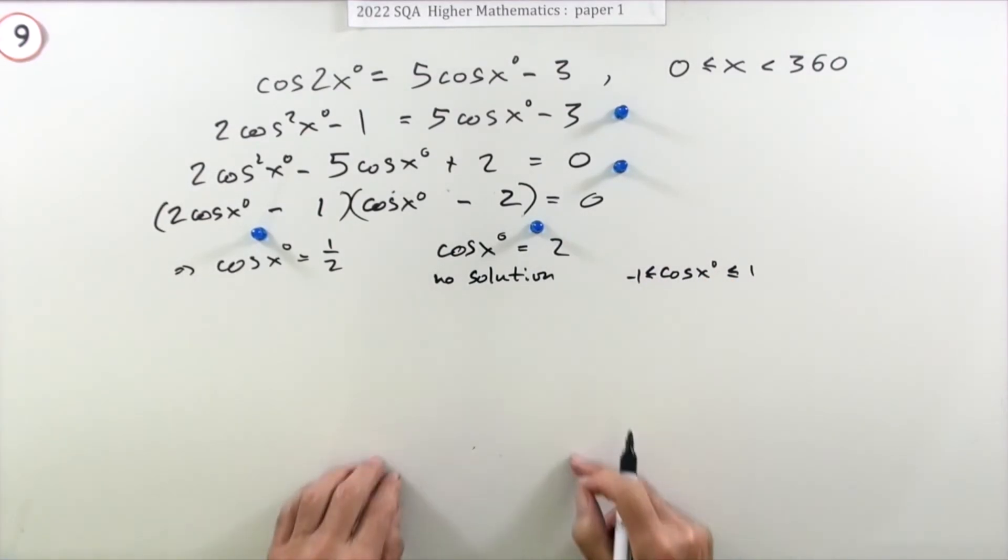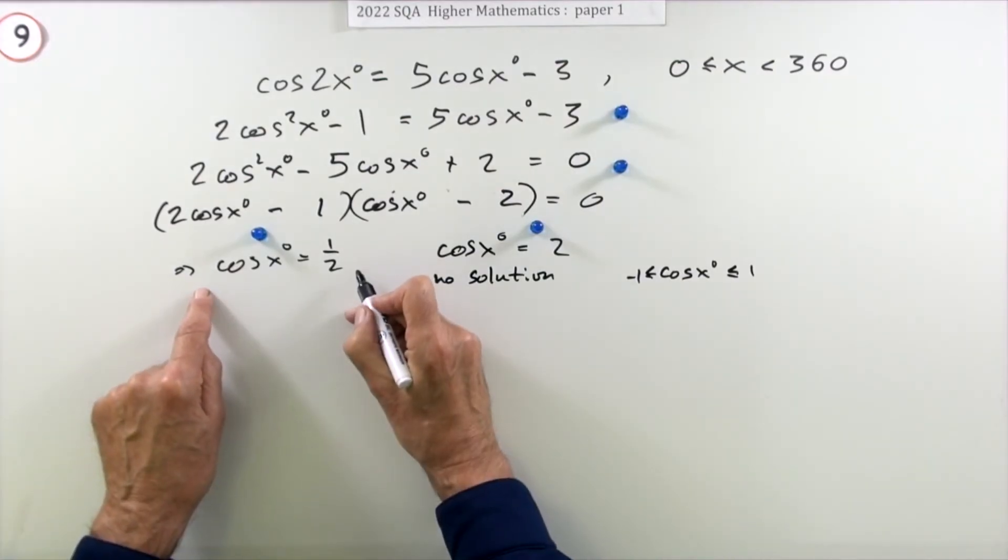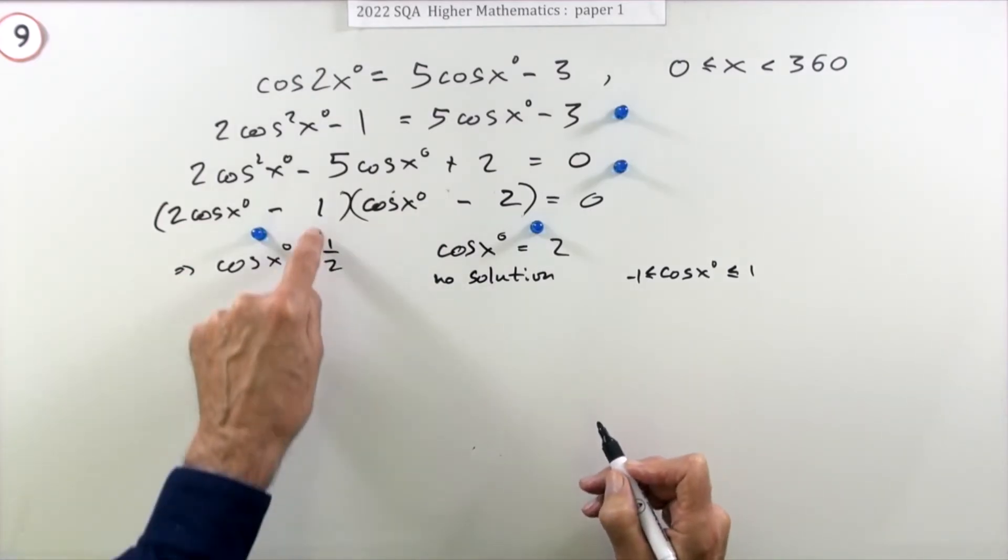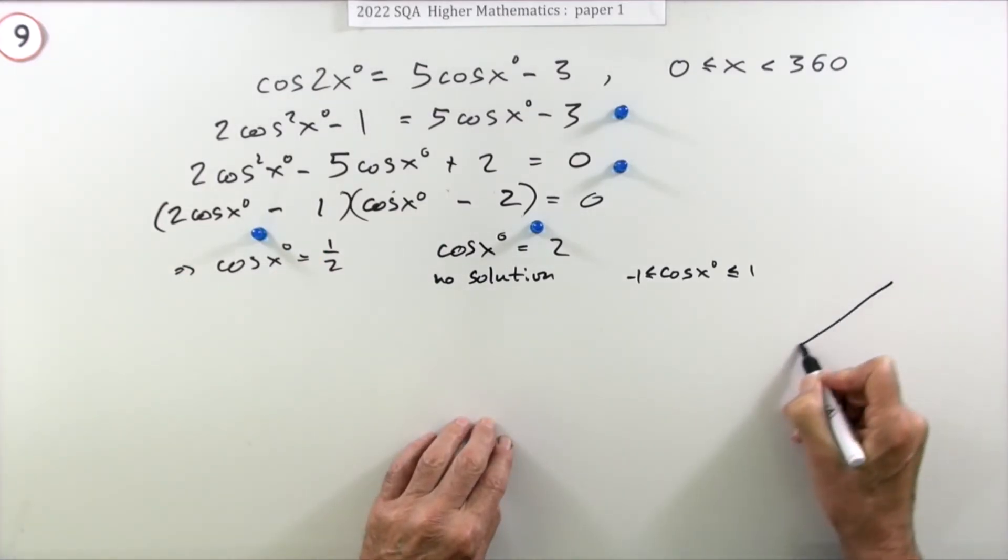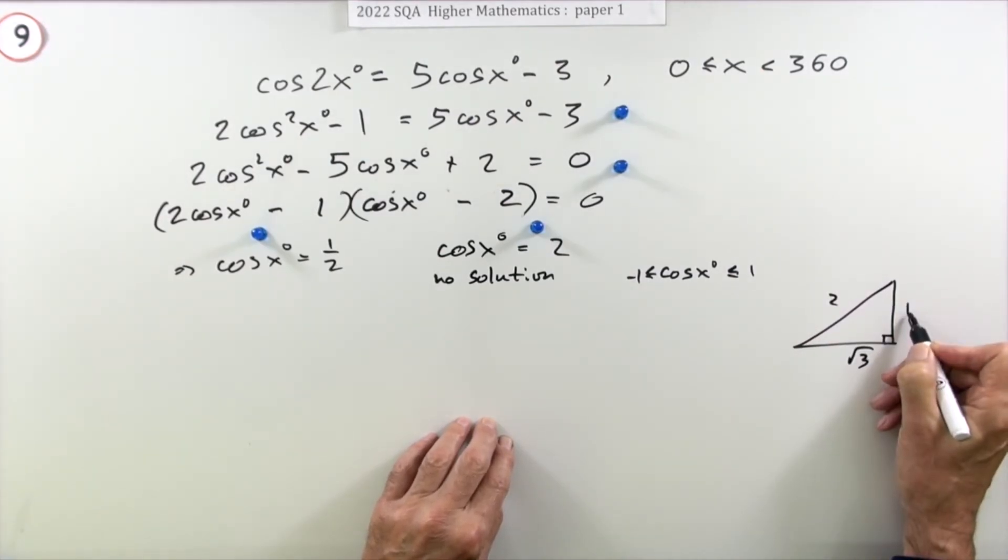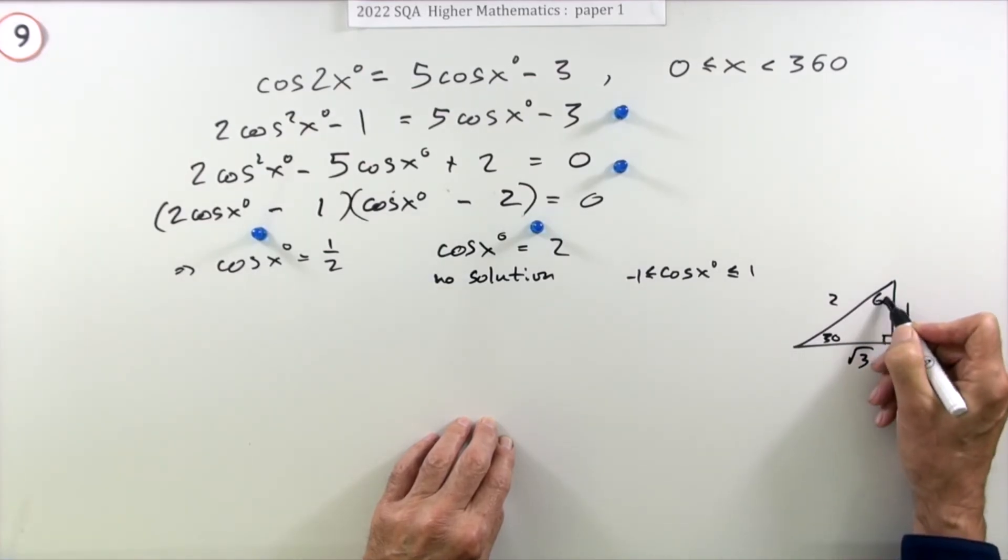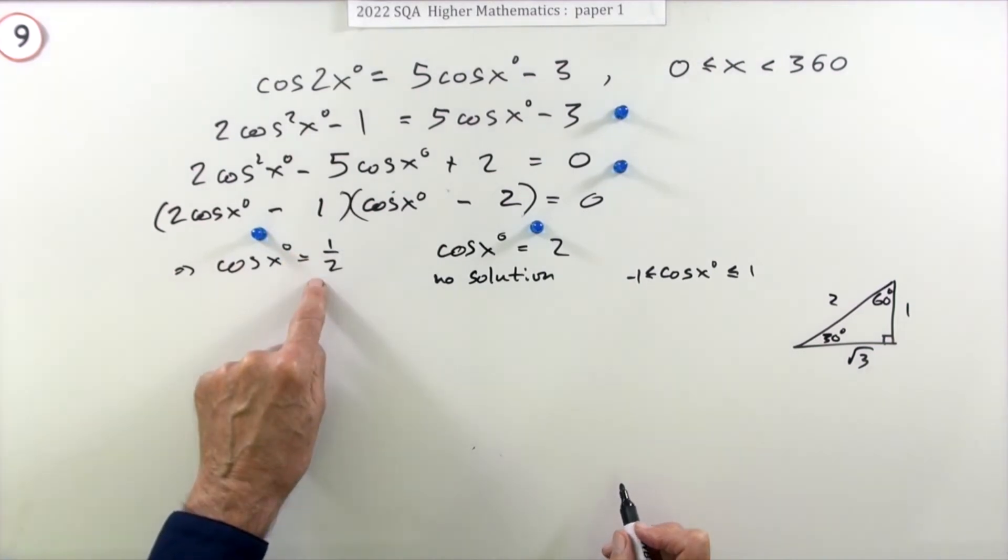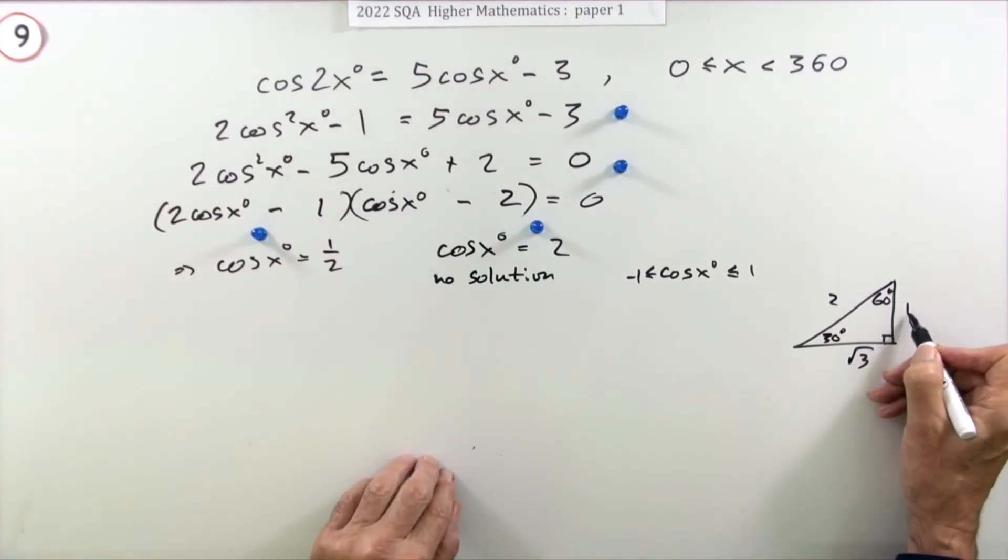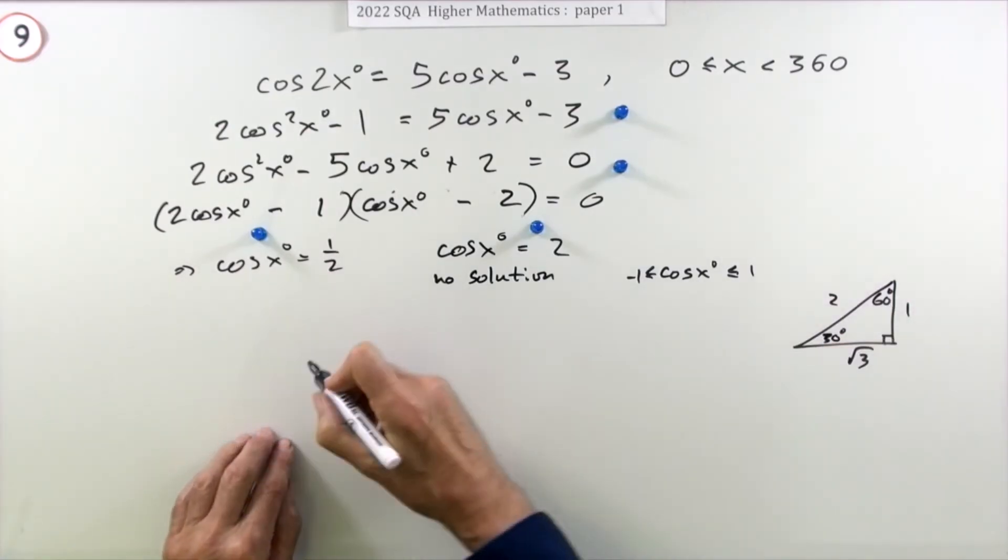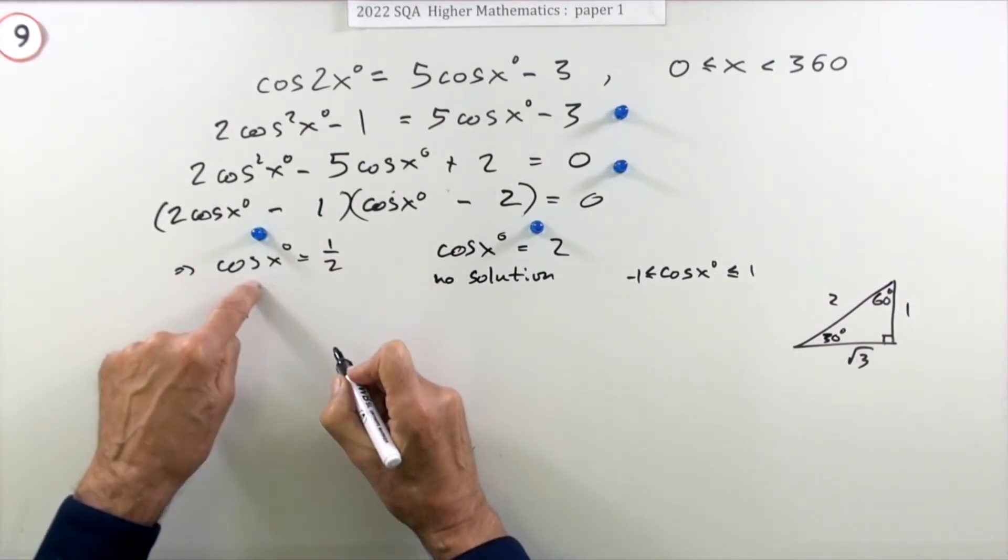This one's got a solution, and it's one you should know because you should recognize a half. If you don't, think of the triangle that involves ones and twos—your little 60-30 triangle: one, two, root three. One's the smallest side opposite the smallest angle, that's the 30. If cosine is a half, the one's adjacent to the 60, so that's 60 degrees.